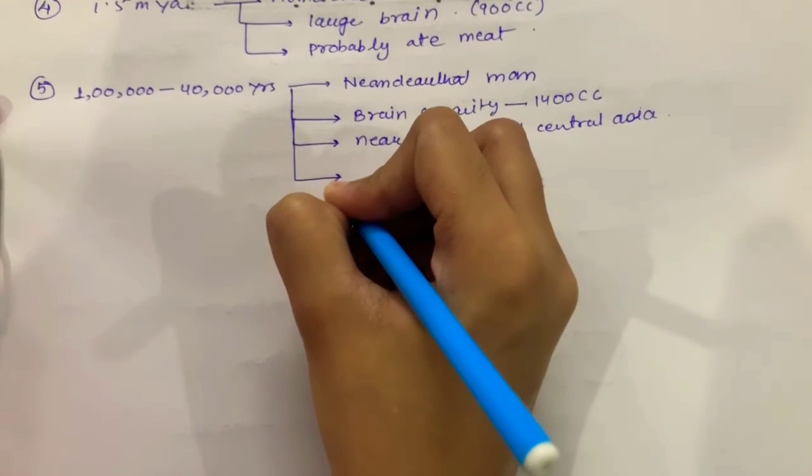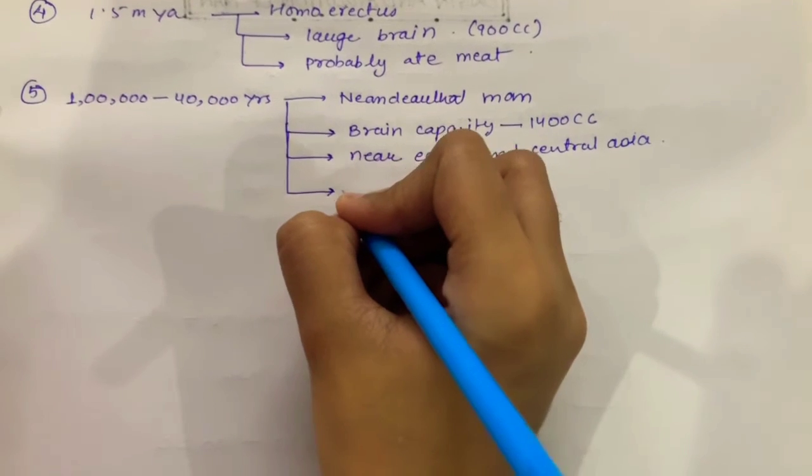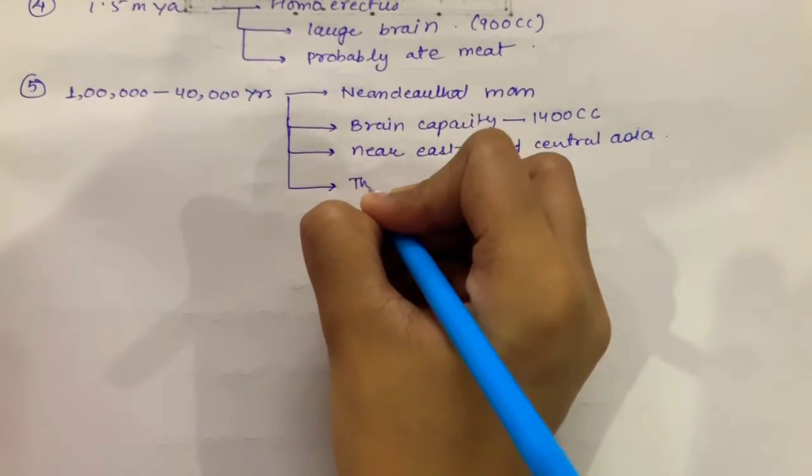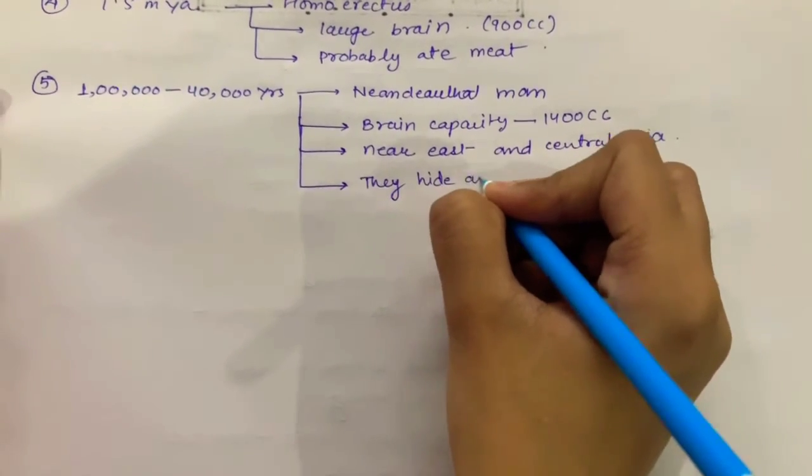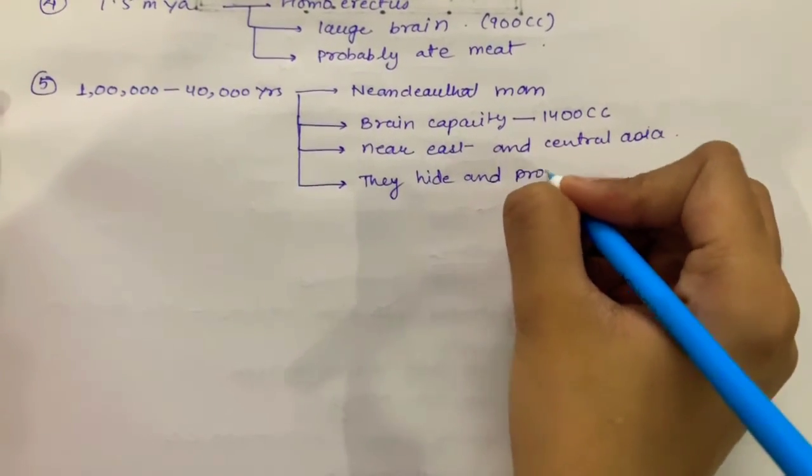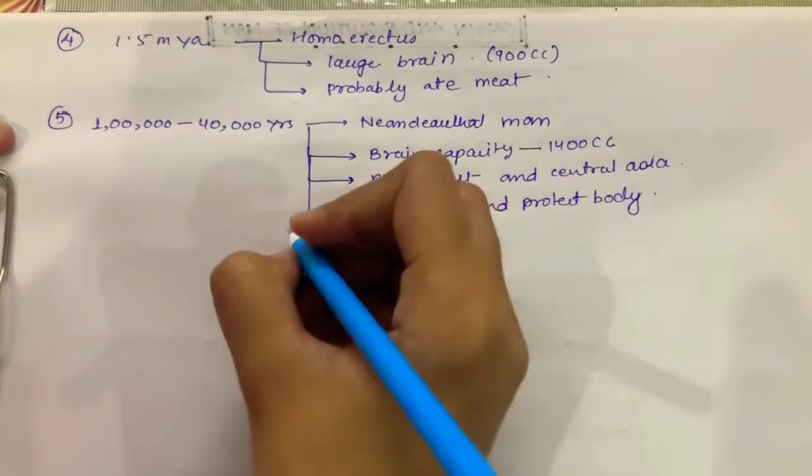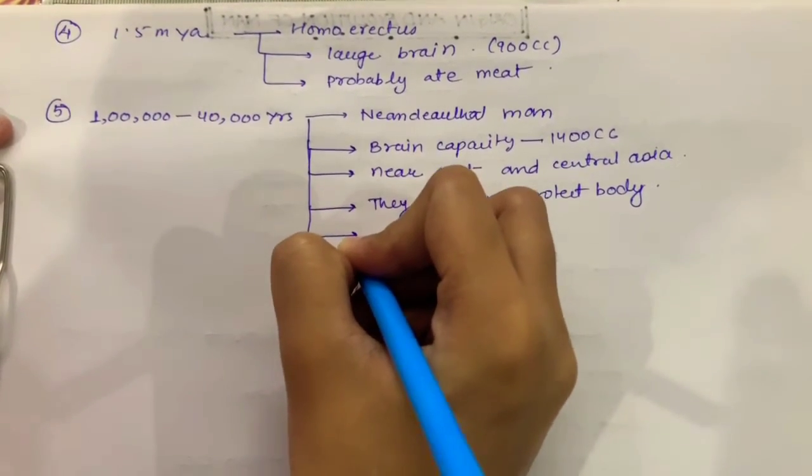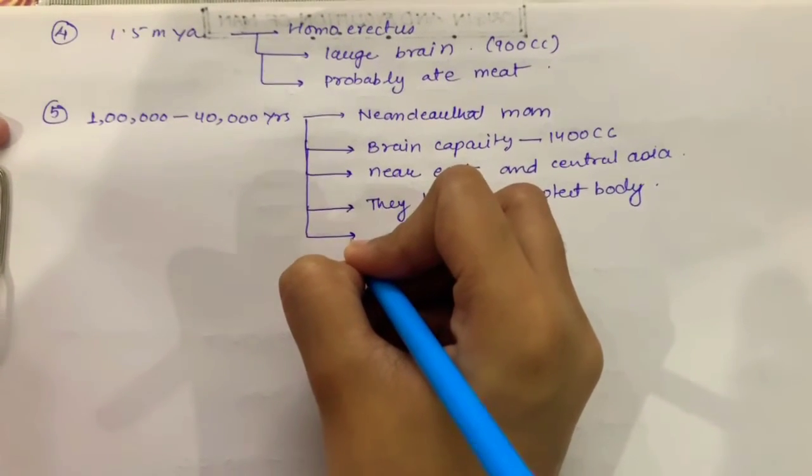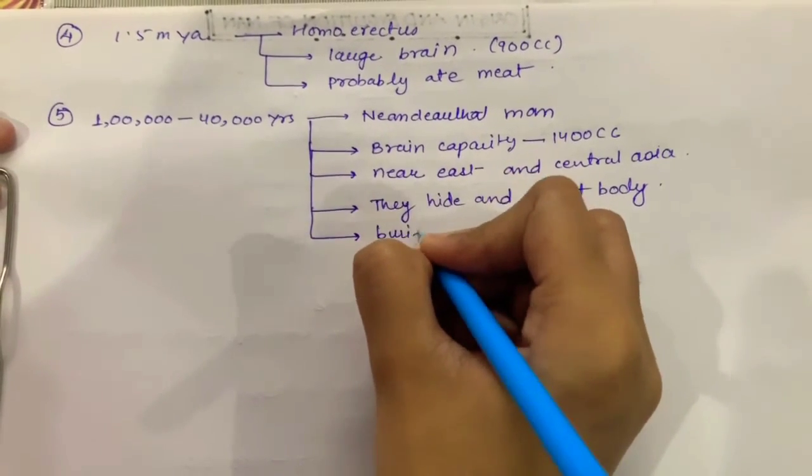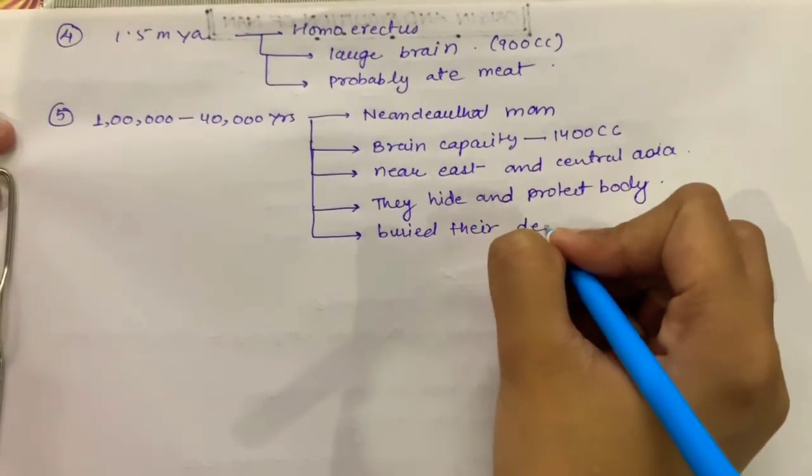What were the new features discovered in the Neanderthal man after evolution? They hid and protected their body, and if a person died, they used to bury their dead.